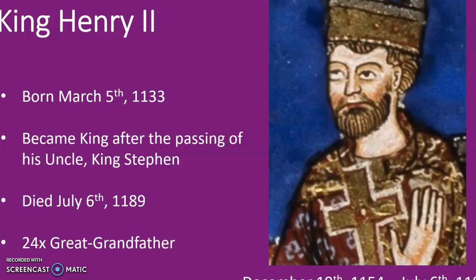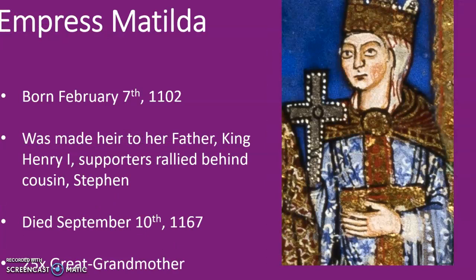King Henry II was the son of Empress Matilda. However, Empress Matilda, who was actually made heir to the throne by her father King Henry I, was never able to realize that inheritance because many of her supporters abandoned her for being a woman and rallied behind her cousin King Stephen. Upon the deathbed of King Stephen, he agreed to allow Empress Matilda's son, King Henry II, to be his heir. Empress Matilda is the 25th great-grandmother of Queen Elizabeth.